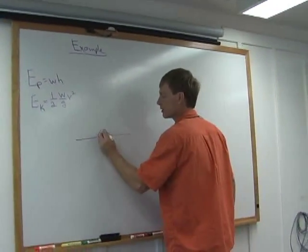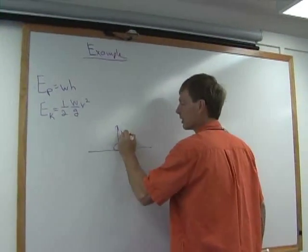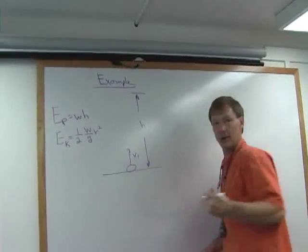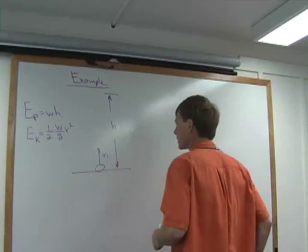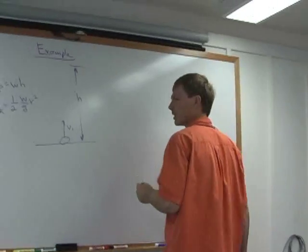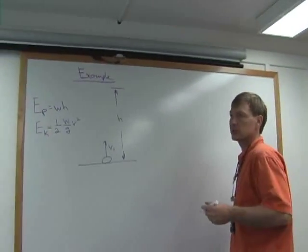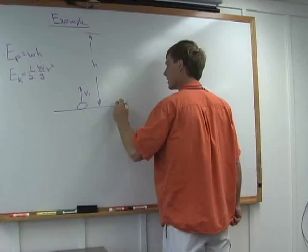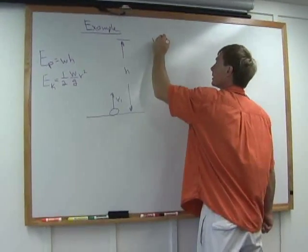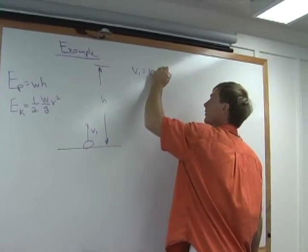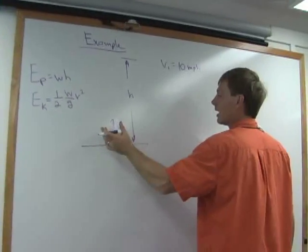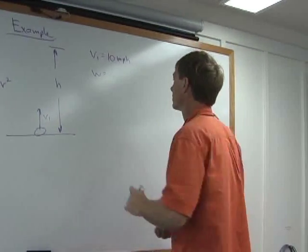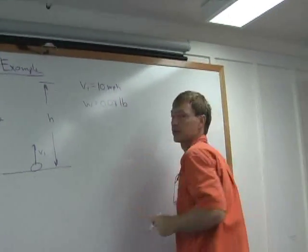I'm going to talk about it compresses here, and it heads off with an initial velocity, and it's going to hit a certain height. I want to know how high it's going to go. Let's say the initial velocity is 10 miles per hour. It takes off at 10 miles per hour, and it's got a weight of about 0.08 pounds.